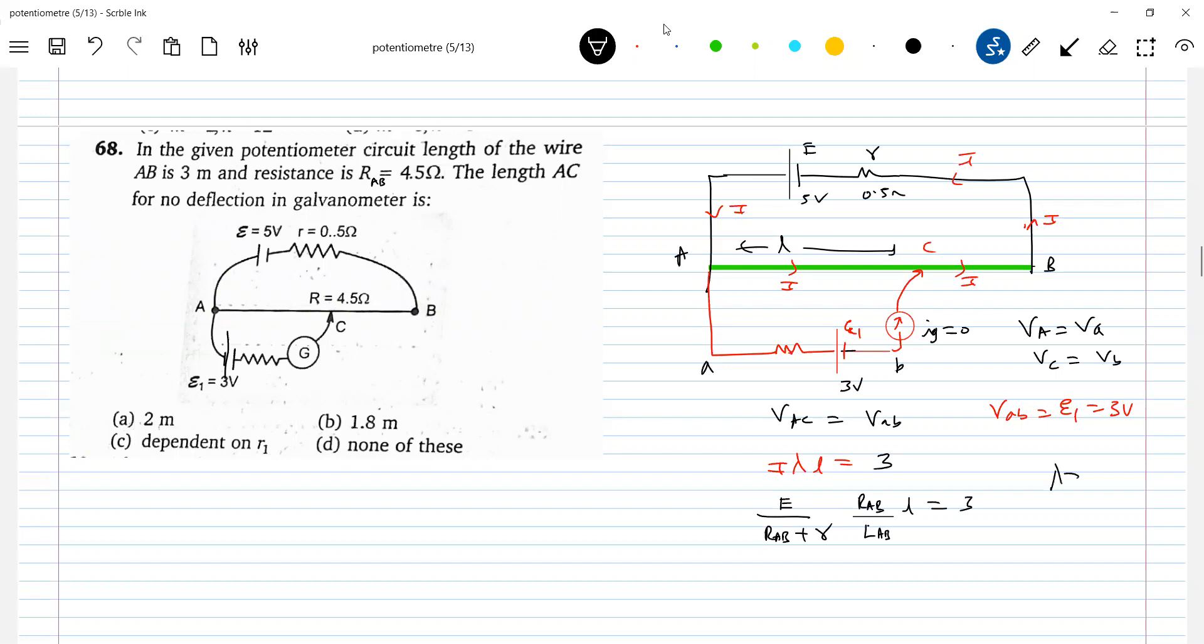Lambda is what? Lambda is how much? RAB by lambda is how much? 4.5 by lambda is 3 meter.